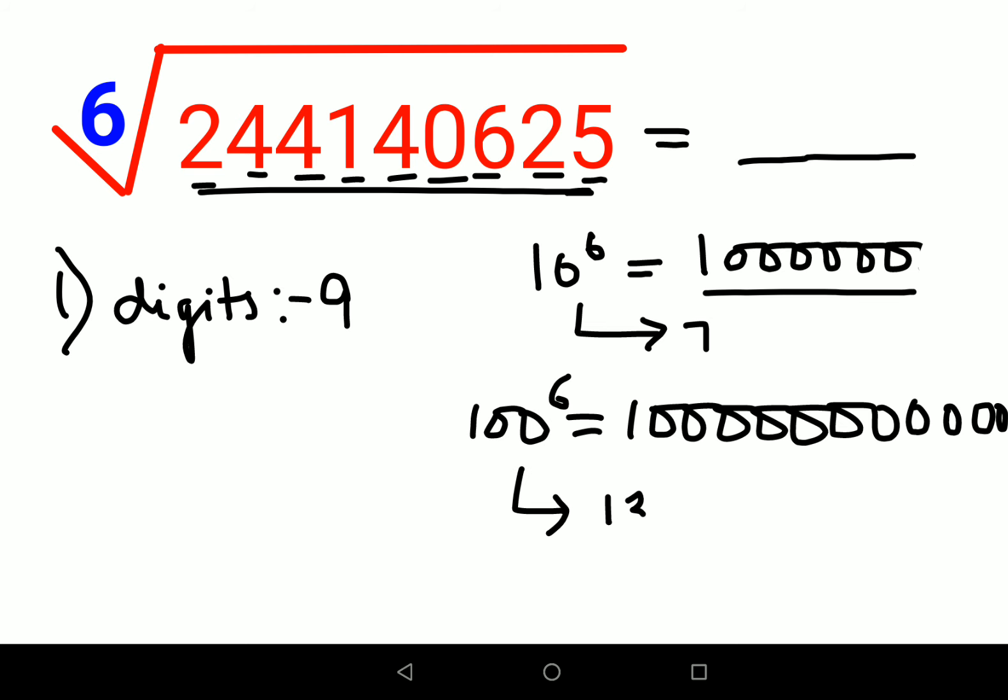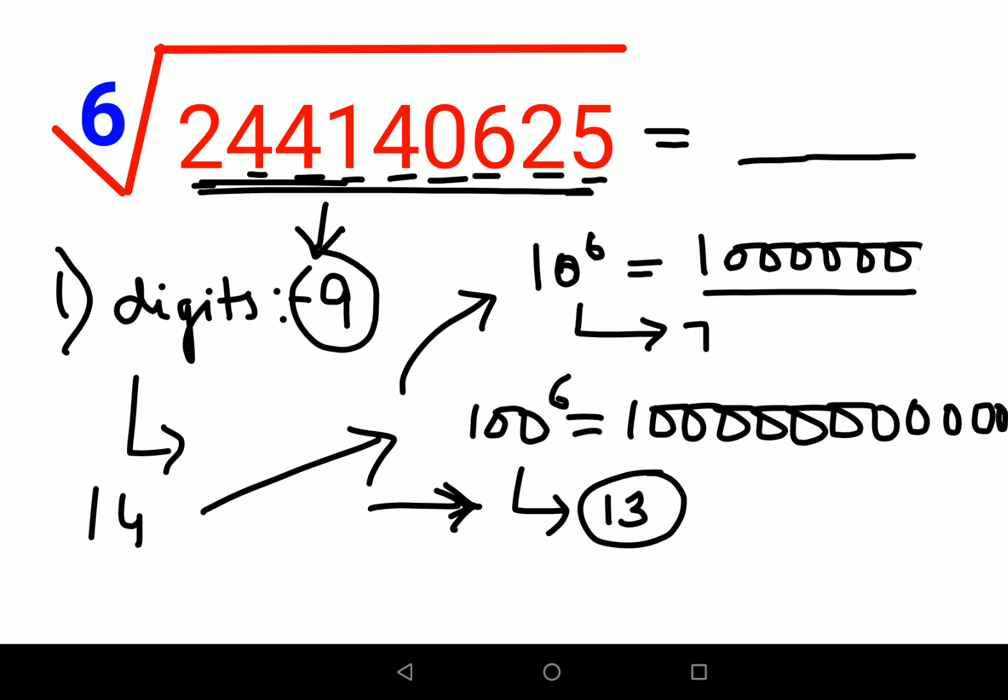Please understand, if the total number of digits in your question is less than 13, in that case your answer by default will be a two digit number. Since this sixth root of this big number has only 9 digits, we will say that this will have only two digits. This is very important for you all to know.